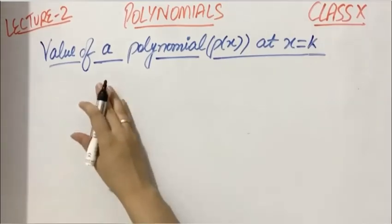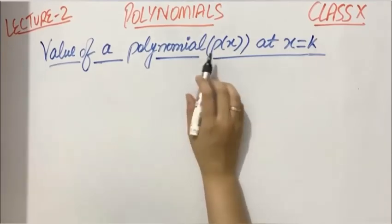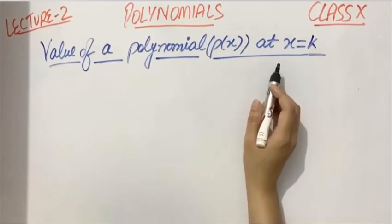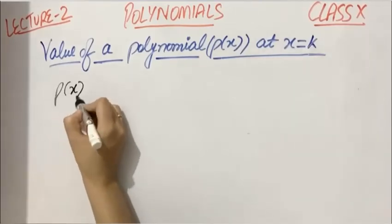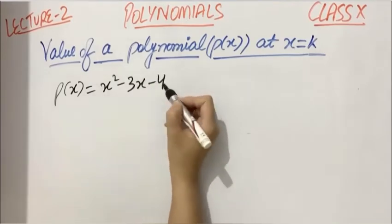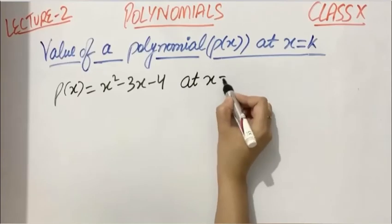The first topic is value of a polynomial at x equals k. If you want to find the value of any polynomial at any random real number, here's how you can do it. Suppose P(x) is x² - 3x - 4, and you need the value of this polynomial at, just suppose, x equals 2.